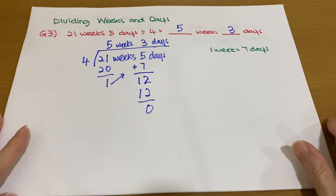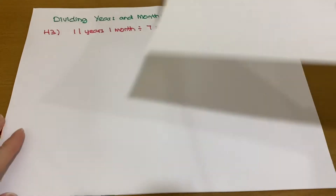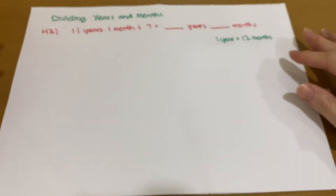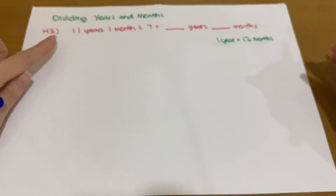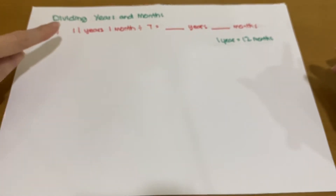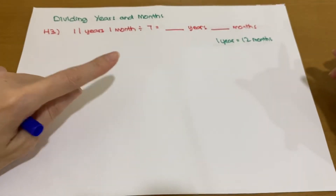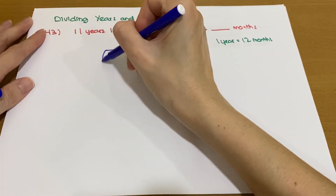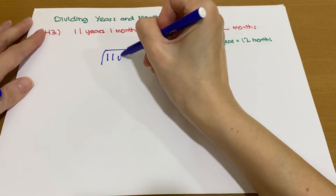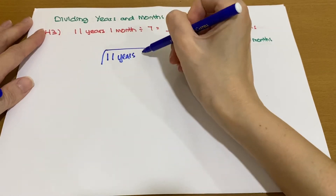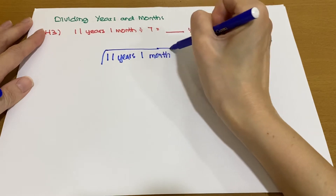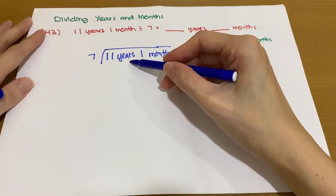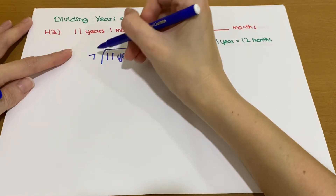Next, I'm going to show you dividing years and months. We have 11 years 1 month divided by 7. Using the long division method, we put 11 years and 1 month inside and 7 outside. Dividing with the years first: 1 × 7 = 7.